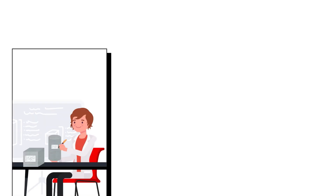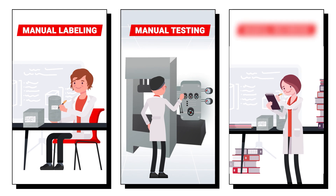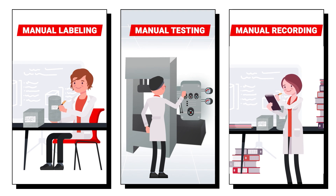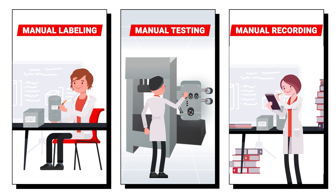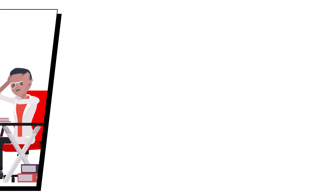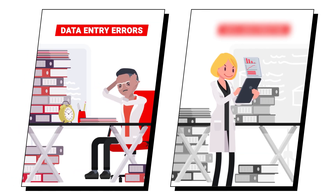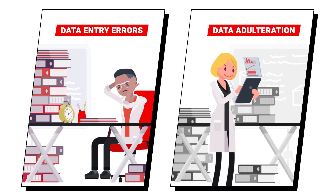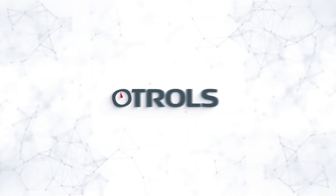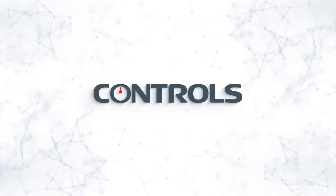In most laboratories, concrete samples need to be manually recorded. The compression machine is used to obtain the final compressive strength results, which are then manually recorded to produce the final test reports. This manual process can lead to data entry errors and even encourage data adulteration. However, concrete testing is changing.